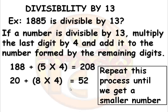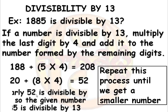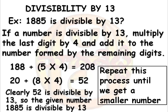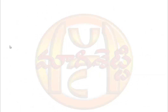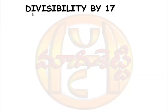Clearly 52 is a smaller number comparatively, and 52 is divisible by 13. So the given number 1885 is also divisible by 13. This is the divisibility rule for 13.